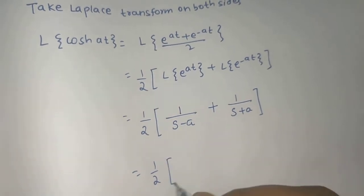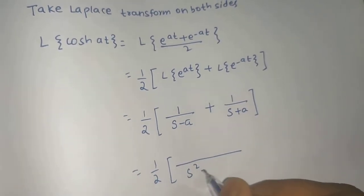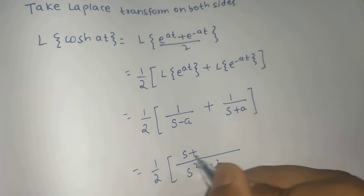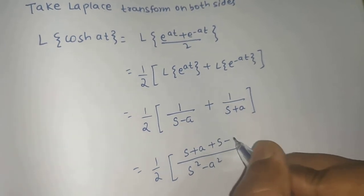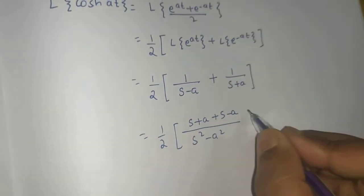Moving ahead with the simplification. a plus b, a minus b is a squared minus b squared. Then we write here s plus a plus s minus a.